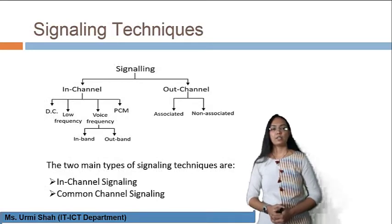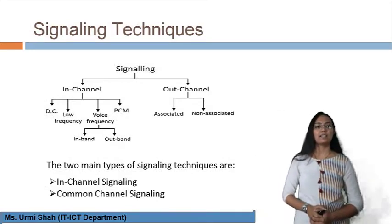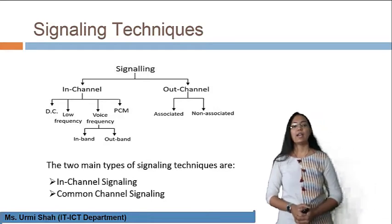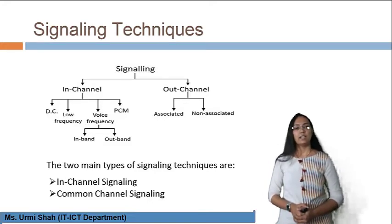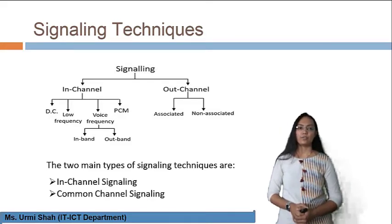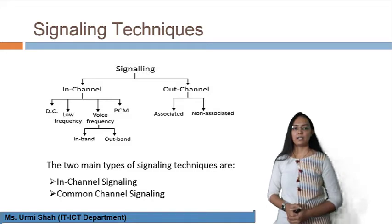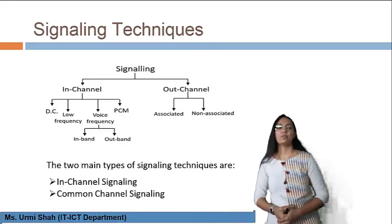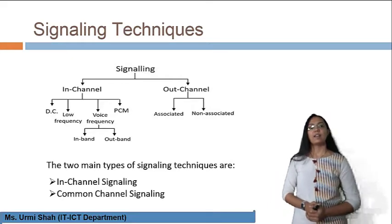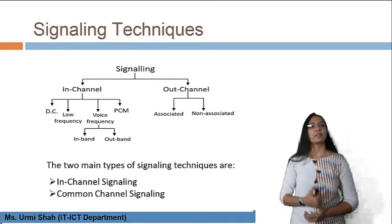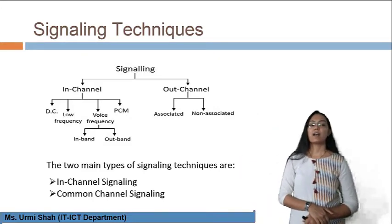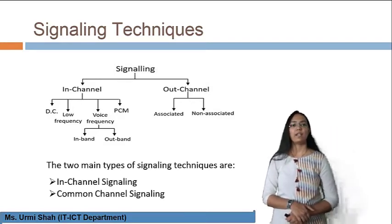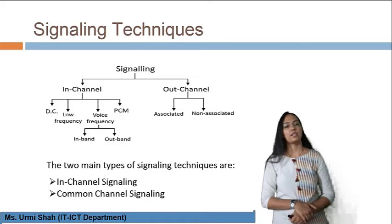The classification of signaling techniques shows two major types: in-channel and out-channel. Under in-channel, the classification includes DC, low frequency, voice frequency, and PCM signaling types. Voice frequency is further divided into in-band and out-band signaling. On the other side, out-channel signaling includes associated and non-associated signaling schemes.